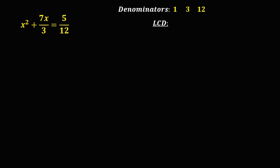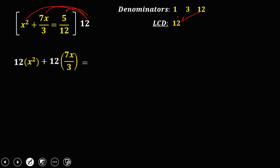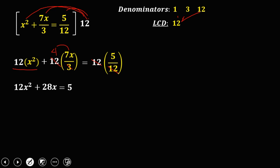12 is divisible by 1, divisible by 3, and divisible by 12. Multiply the LCD to the given equation and distribute to every term: 12 times x squared, plus 12 times 7x over 3, equals 12 times 5 over 12. Simplify: 12x squared, 12 divided by 3 is 4, so 4 times 7x is 28x, and 12 divided by 12 is 1, so that equals 5.